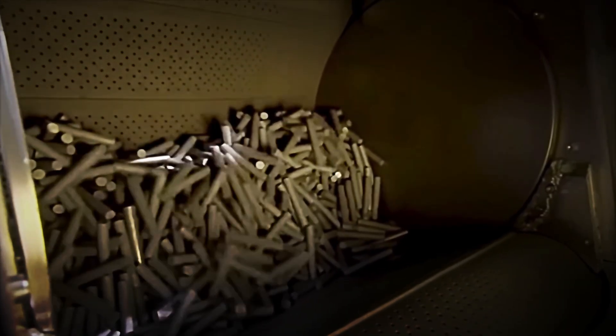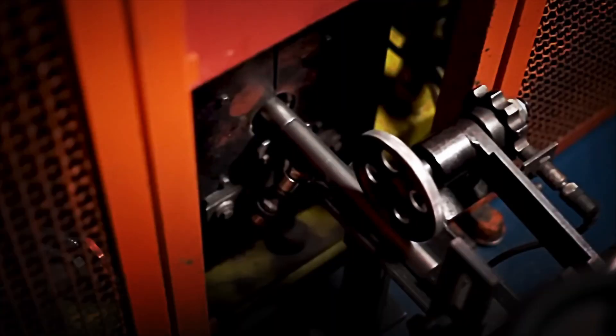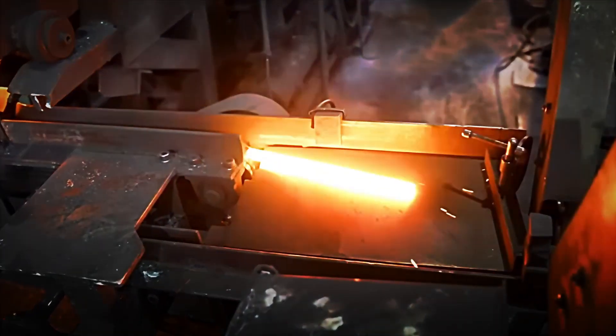Once prepared, the steel segments are placed in a reheating furnace. There, they remain until they reach between 1,000 and 1,250 degrees Celsius, depending on the alloy. At these temperatures, the steel becomes malleable, allowing it to be shaped without losing its integrity.